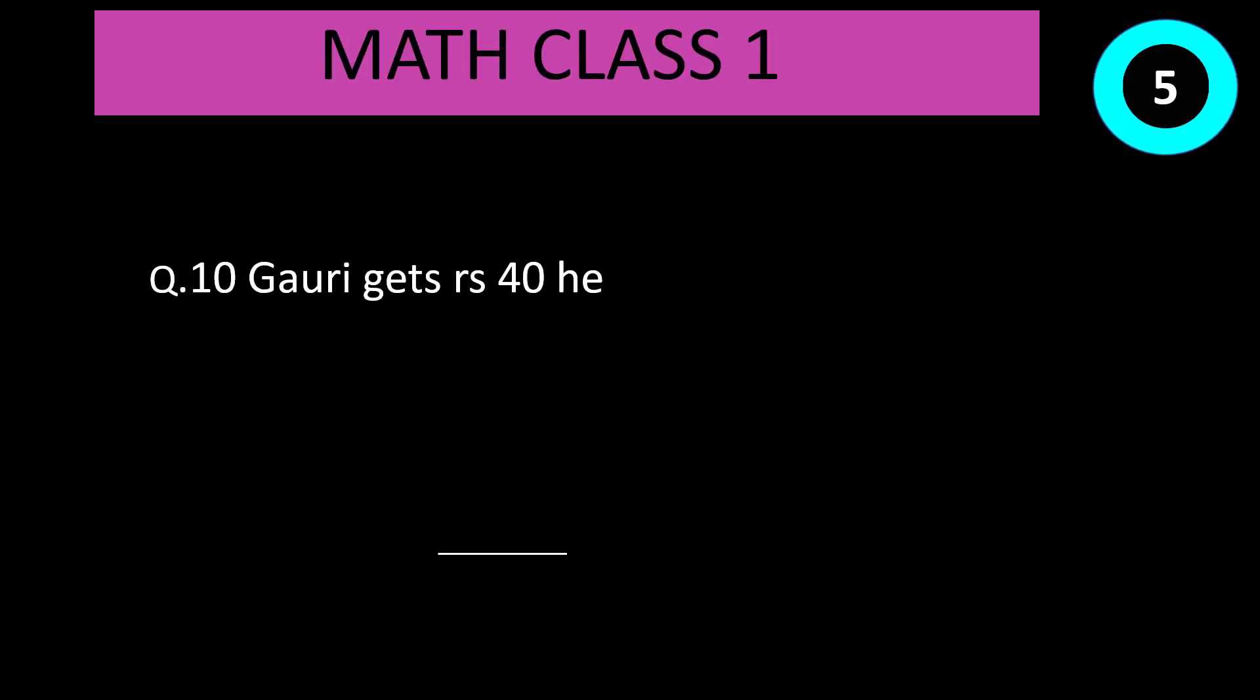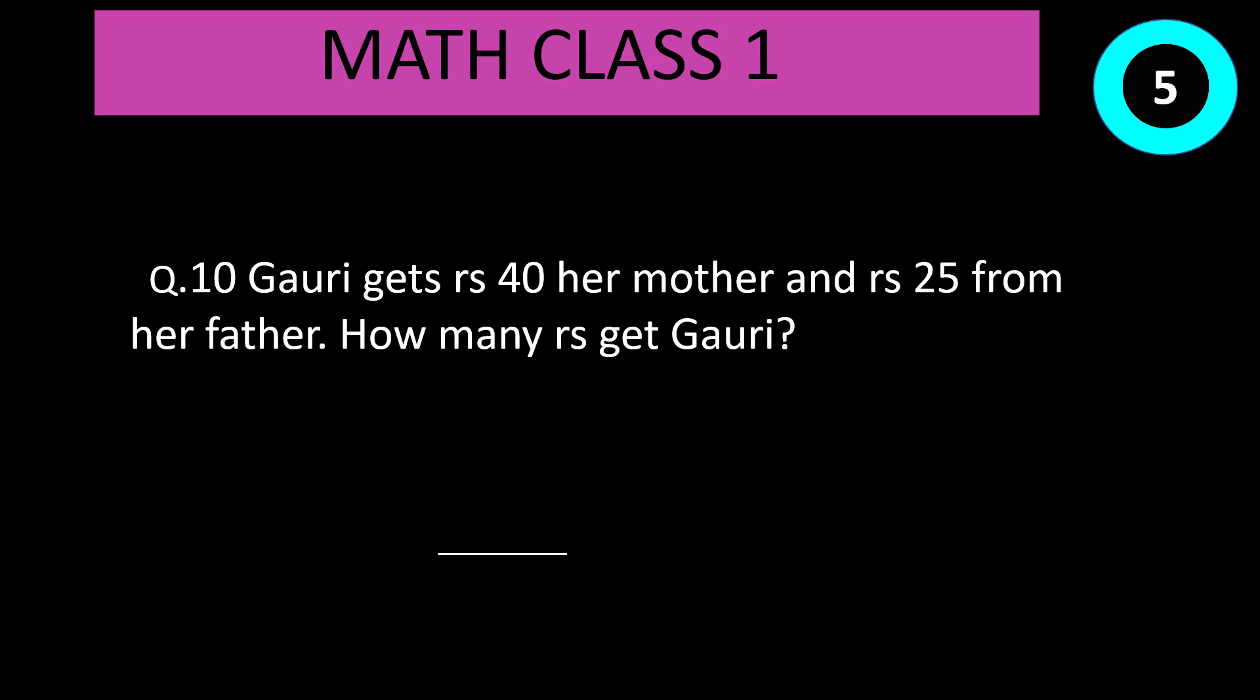Question number 10: Gauri gets Rs. 40 from her mother and Rs. 25 from her father. How many rupees does Gauri get? Time start now. Correct answer is 40 plus 25 equal to 65.